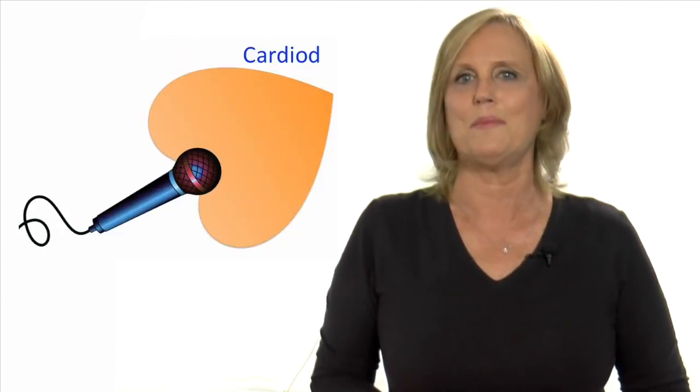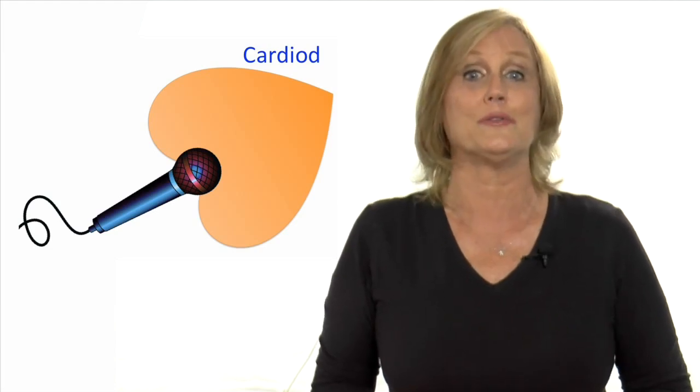Where you stand in relation to the microphone can also affect the captured sound. In an earlier episode, we discussed the various pickup patterns of microphones, with cardioid being the most common pickup pattern for voice-over microphones, because it captures what is directly in front of the mic and ignores the rest. If you position your mouth to the side of a cardioid microphone, the sound may not be as clear as if you stood directly in front of it.